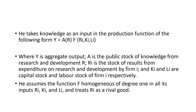This is the equation that Romer has given with respect to his endogenous growth model. He takes knowledge as an input in the production function. His equation is: Y is equal to A into F of R_i, K_i, L_i. Here, Y shows aggregate output in the economy — that is, the output produced by all the firms in the economy.